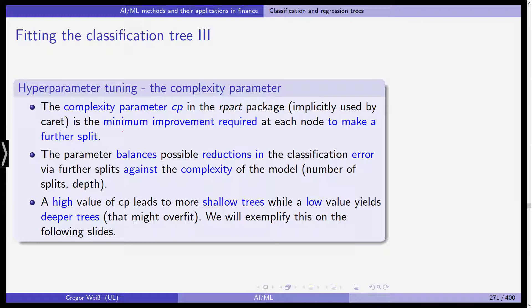A high value of the CP, the complexity parameter, leads to more shallow trees, while a low value yields deeper trees that might overfit. On the following slides we'll exemplify this so you can get an idea of what happens.